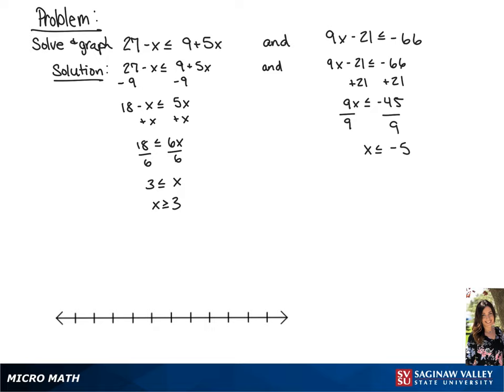The answer to this problem is going to be the intersection of two sets: negative infinity to negative 5, and 3 to positive infinity. Since these two sets do not intersect anywhere, this problem is going to have no solution.